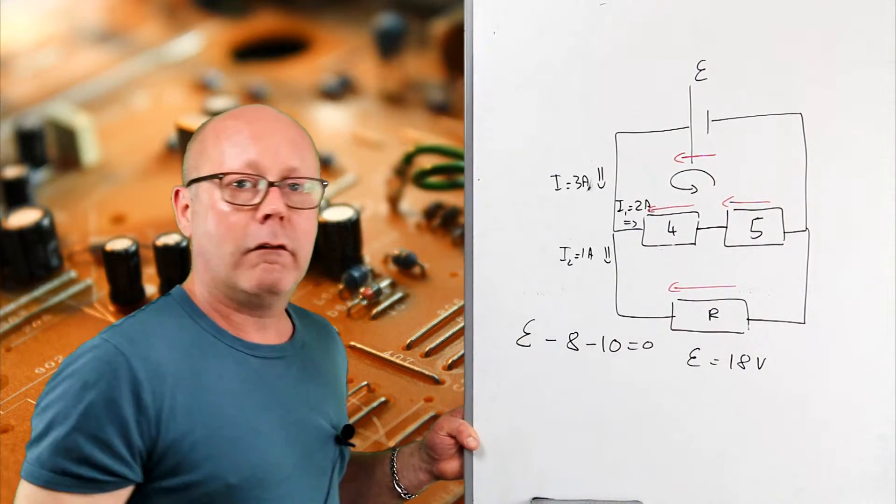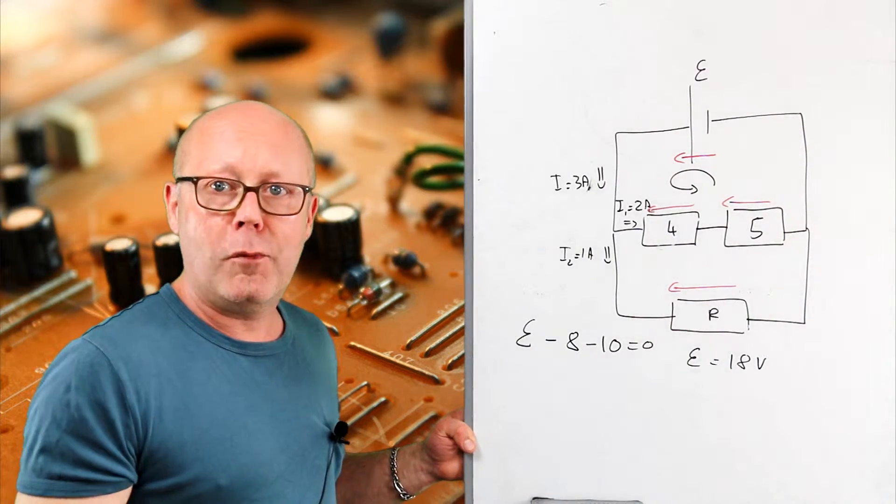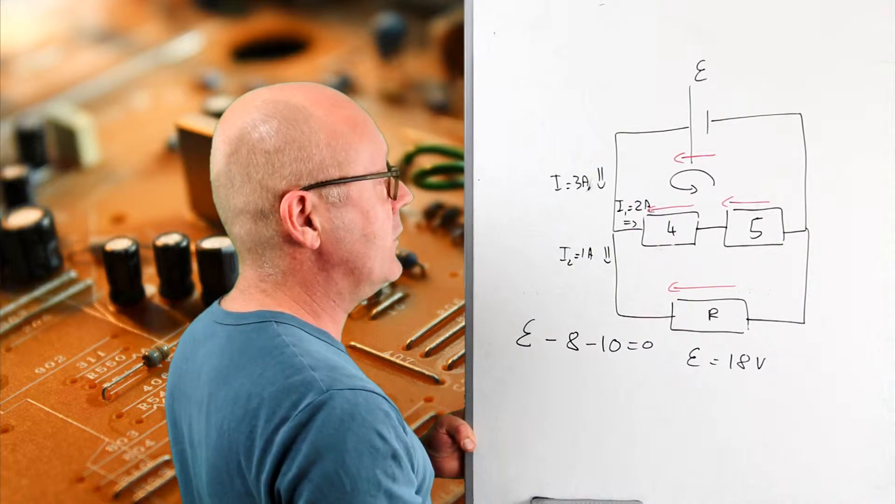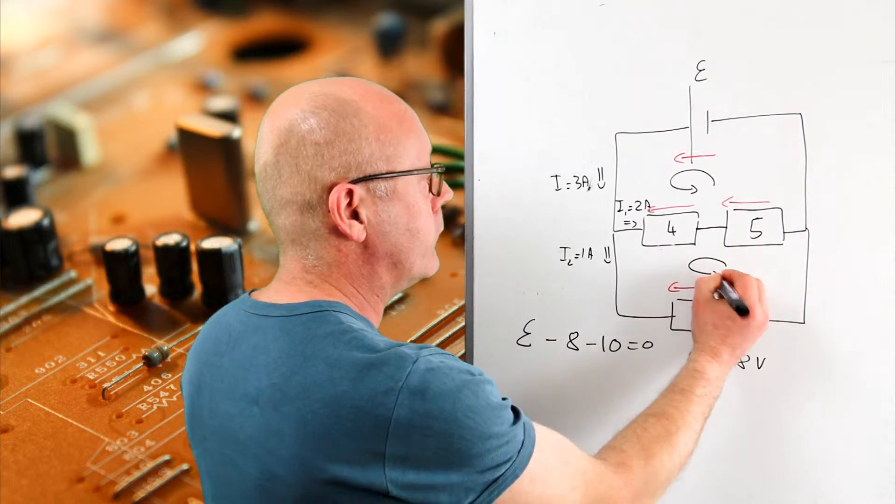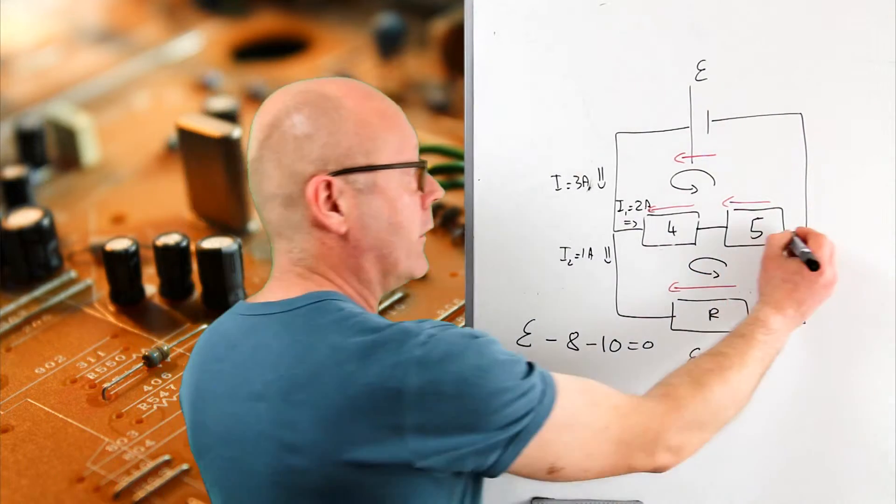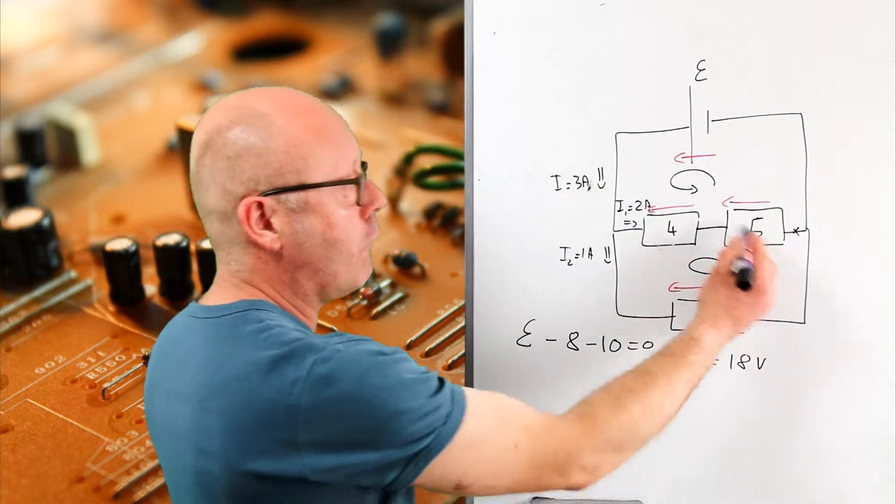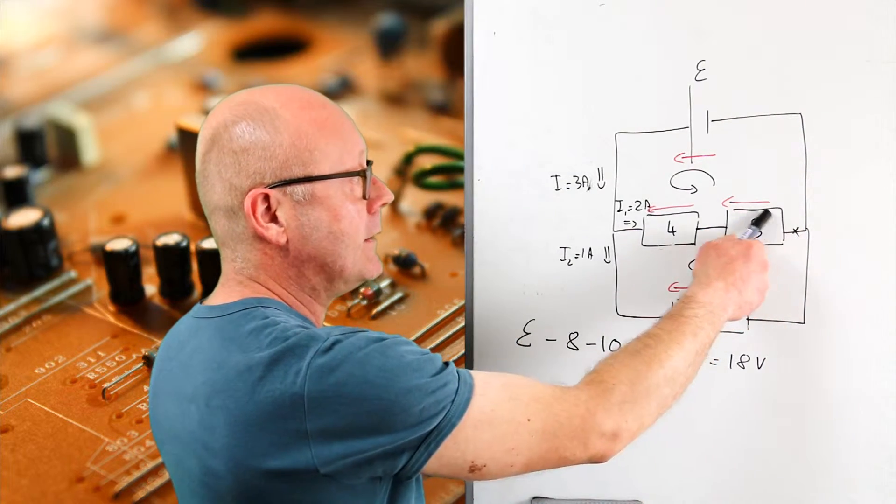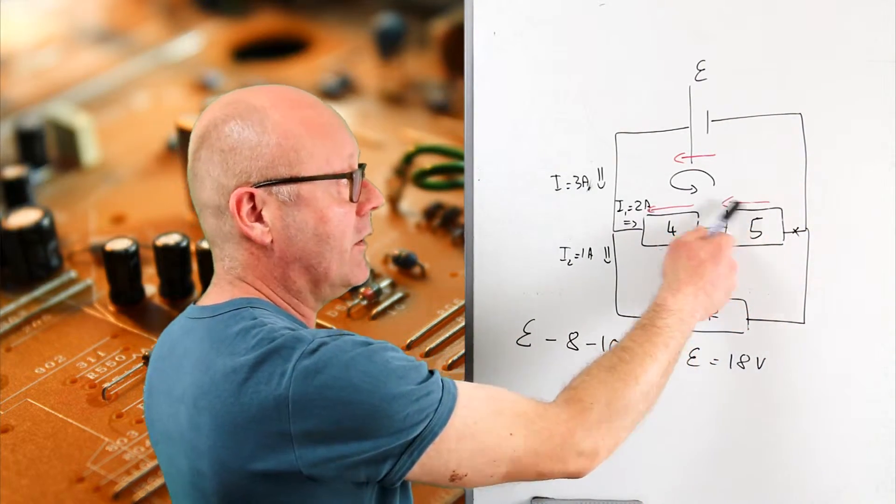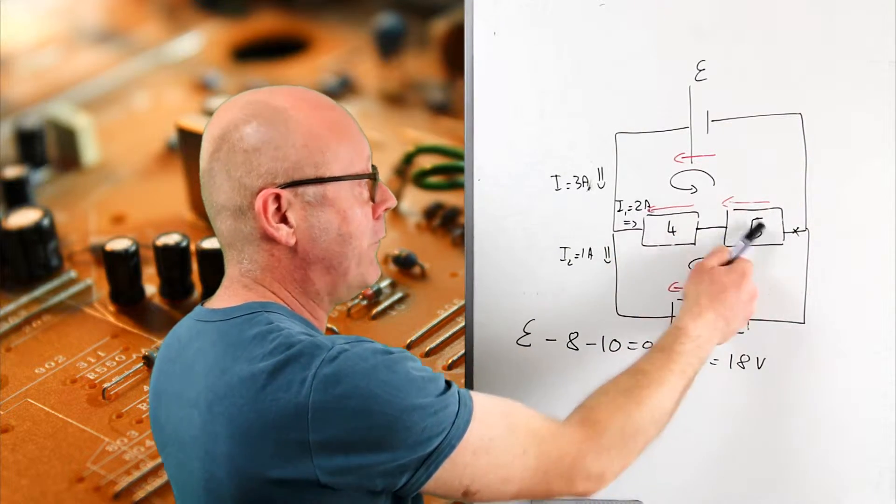Now I need to find the resistor R where I can again use the loop law. Let's take, for instance, this small loop. So I start here and I go around the loop. I see a potential increase in this direction of 2 by 5, 10.